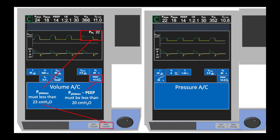For patients on the pressure assist control mode, the delivered inspiratory pressure must be less than 20 centimeters of water, and the sum of the delivered inspiratory pressure and the PEEP must be less than 23 centimeters of water.